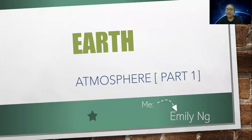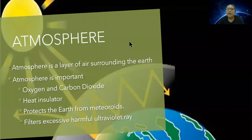Hey guys, it's Andy here. Today we are talking about atmosphere part 1. Atmosphere is a layer of air surrounding the earth. Atmosphere is important to living things as it provides oxygen for respiration and carbon dioxide for photosynthesis.